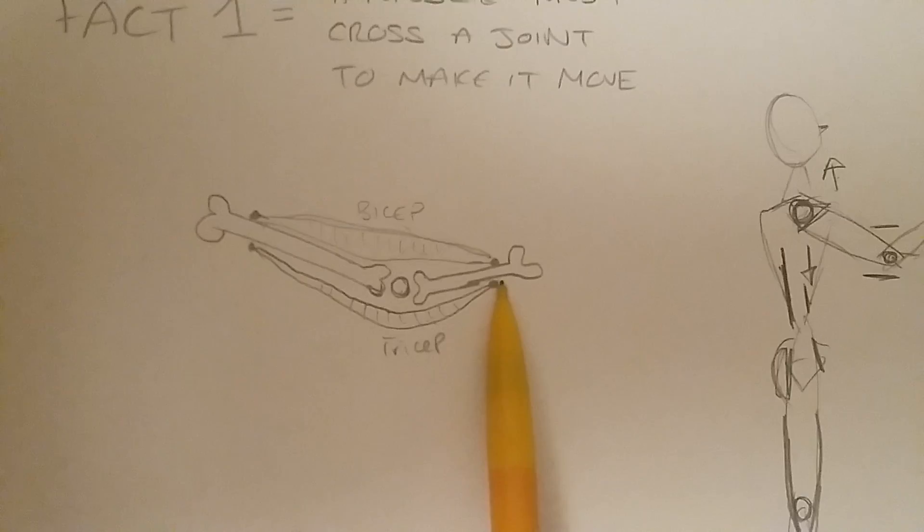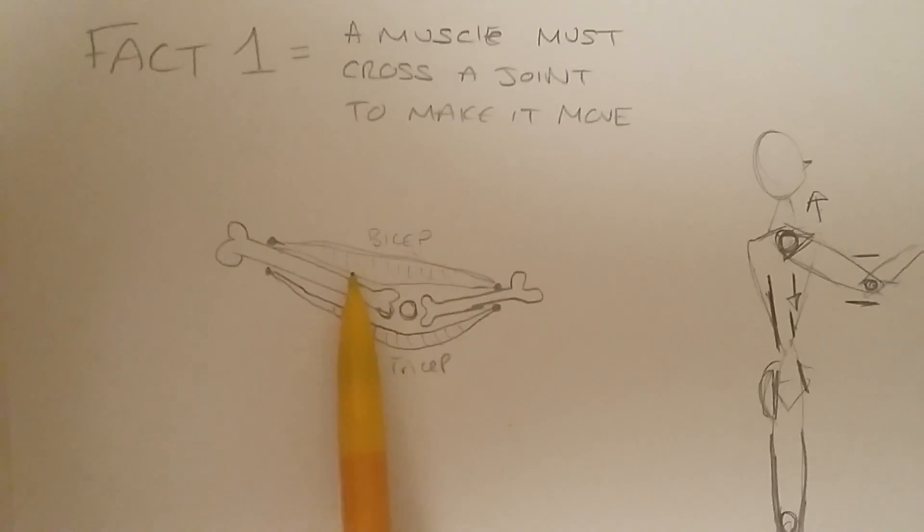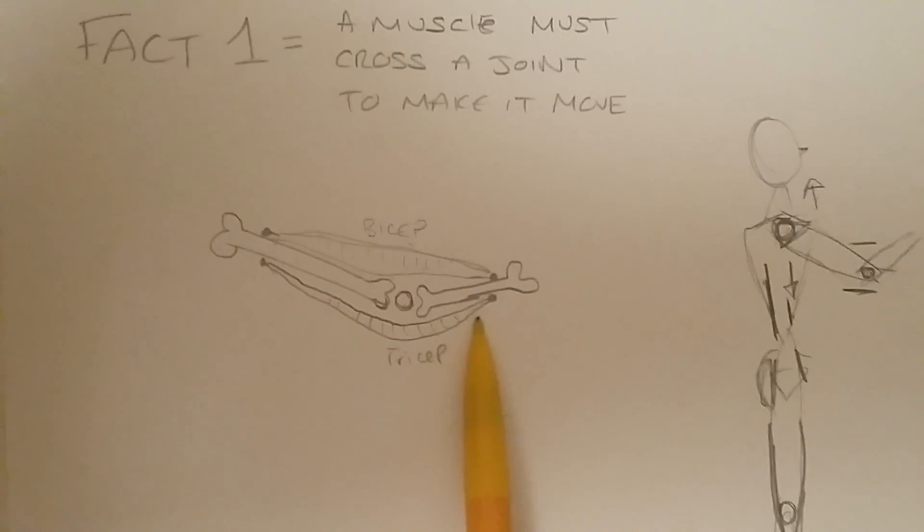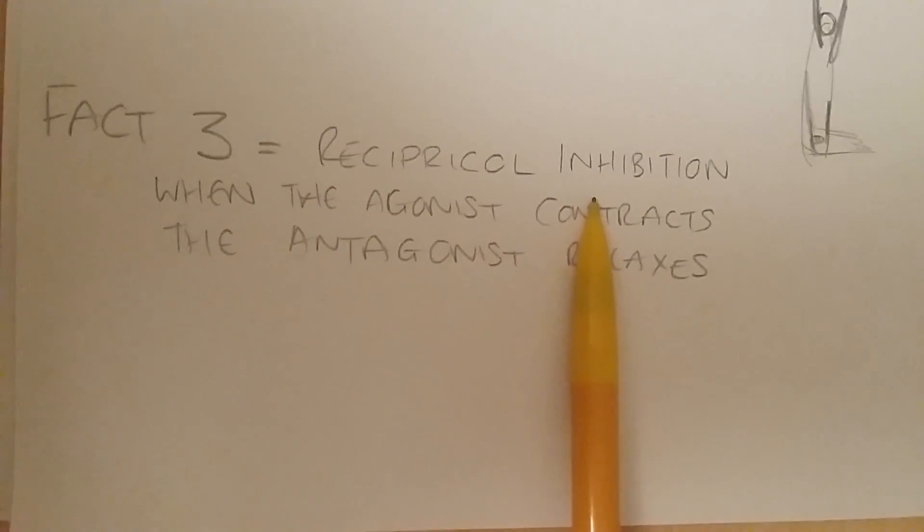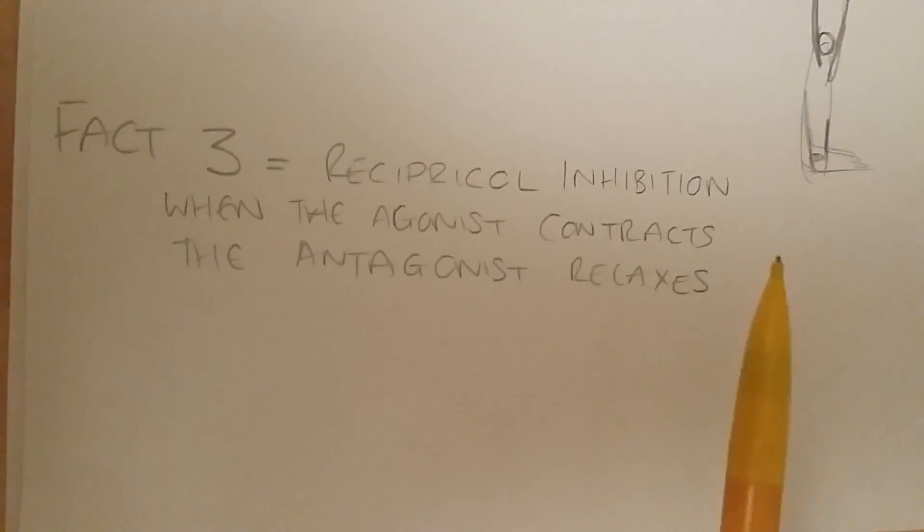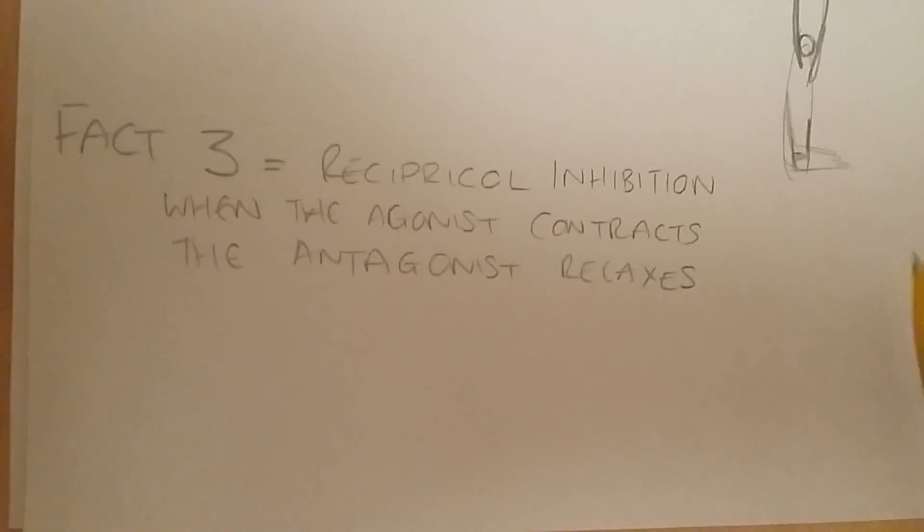Because it's joining at the same point. So if the bicep gets shorter, the tricep must get longer. And that's basically what's happening with any reciprocal inhibition. When one contracts, the other relaxes. Perfect.